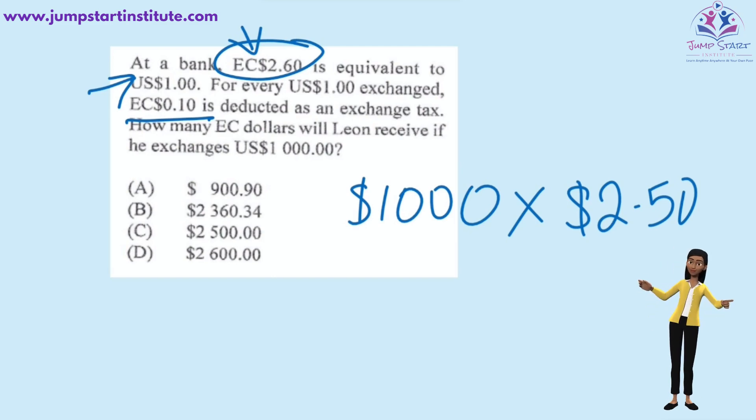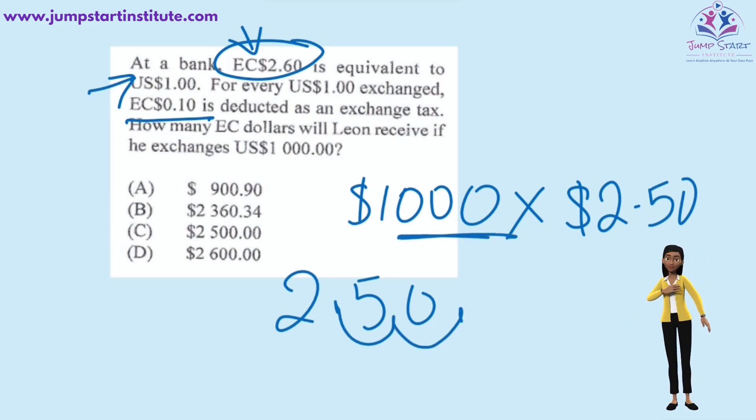Multiplying $2.50 by $1,000, we can simply move the decimal point three spaces to the right because we have three zeros here. Moving, we say one, two, three. Therefore, the answer will be C, $2,500.